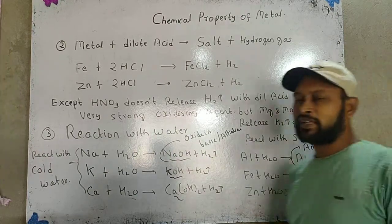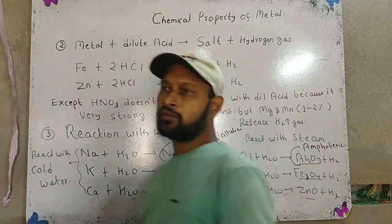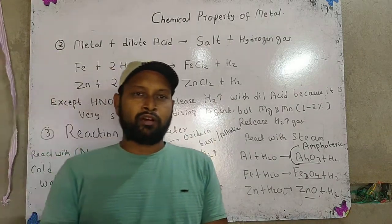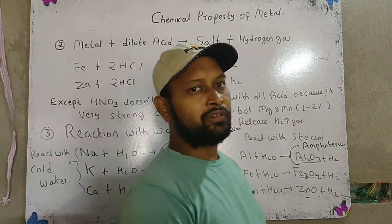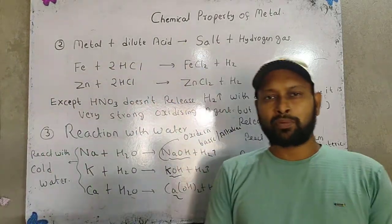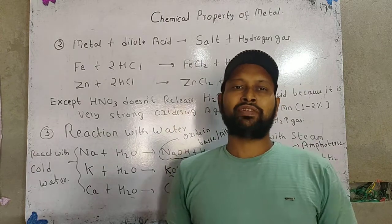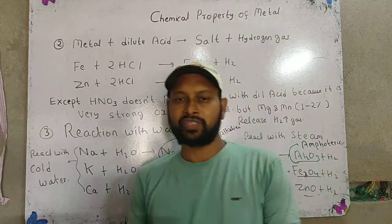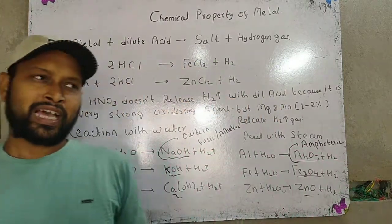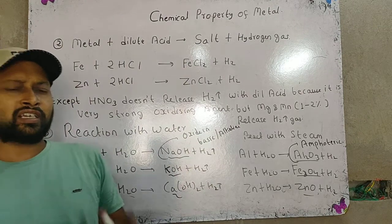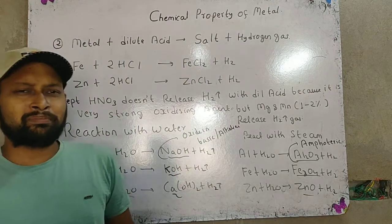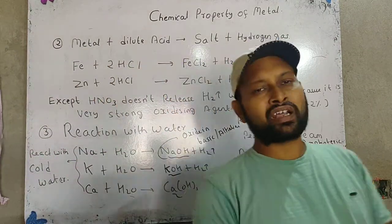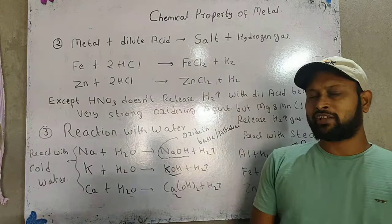Good morning students, once again welcome to the third part of metal and non-metal. In the last video we already discussed about the chemical property of metal — that means when the metal reacts with oxygen, it forms the oxide. We already learnt about some metal oxides that are basic in nature and some that are amphoteric oxides.